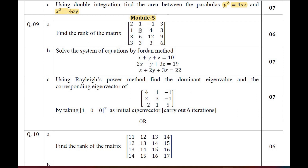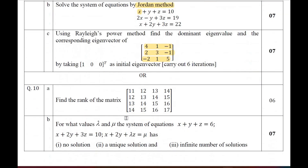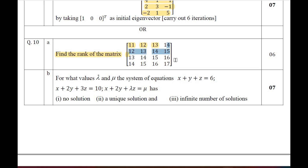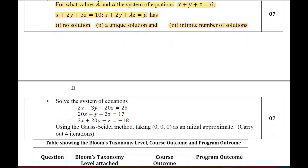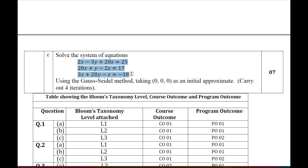Moving on to Module 5 — linear algebra — Questions 9 and 10. Question 9A: find the rank of the given matrix. Question 9B: solve the system of equations using the Gauss-Jordan method. Question 9C: use Rayleigh's Power method to find the largest eigenvalue and corresponding eigenvector. Question 10A: find the rank of the given matrix. Question 10B: solve the system of equations and verify consistency. Question 10C: solve the system of equations using the Gauss-Seidel method with initial condition (0, 0, 0).